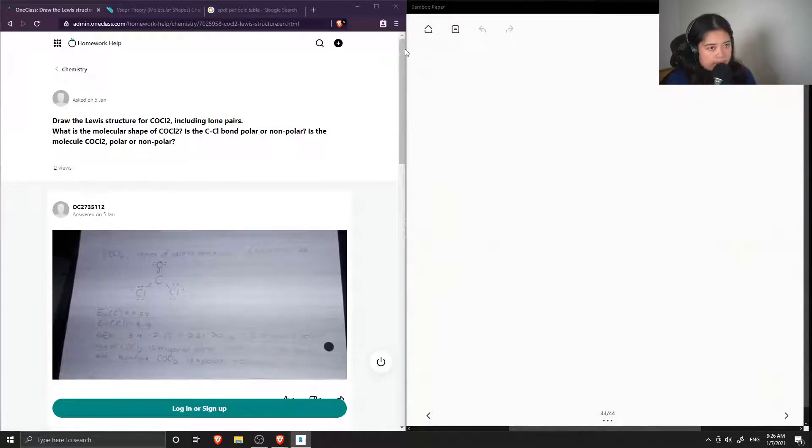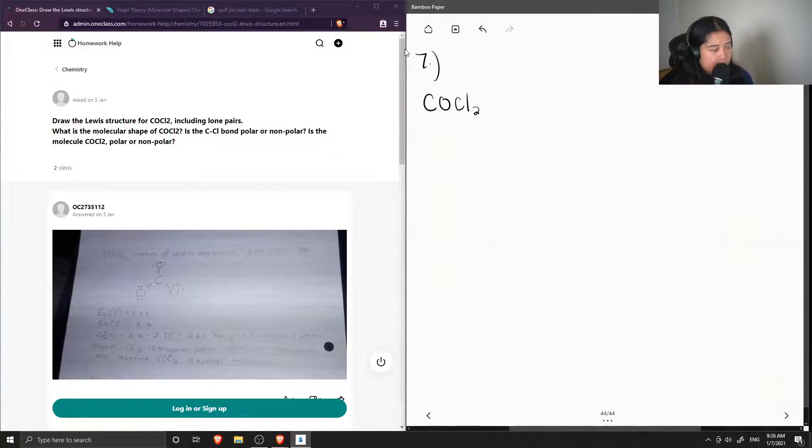Okay, so question seven: draw the Lewis structure for COCl2, including lone pairs. What is the molecular shape? Is the carbon-chlorine bond polar or non-polar? Is the molecule polar or non-polar?